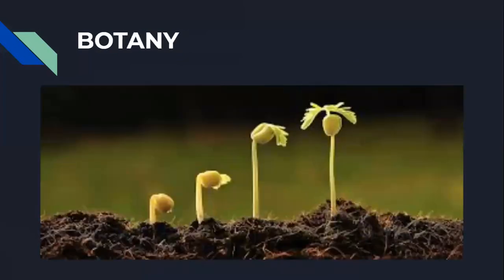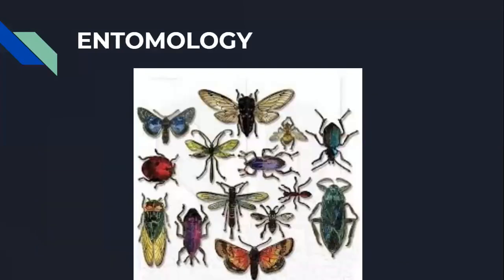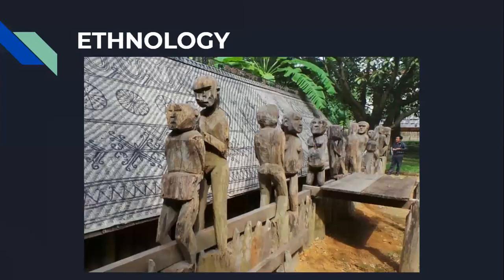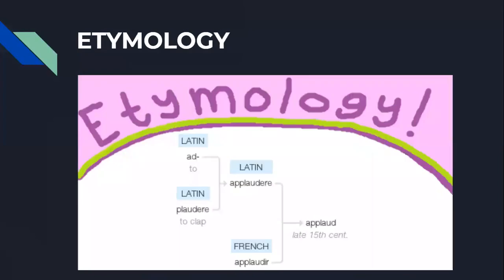Botany — this also all of you are learning — botany is the study of plants. Entomology is the study of insects. Ethnology is the study of culture. The study of the origin of words is called etymology.